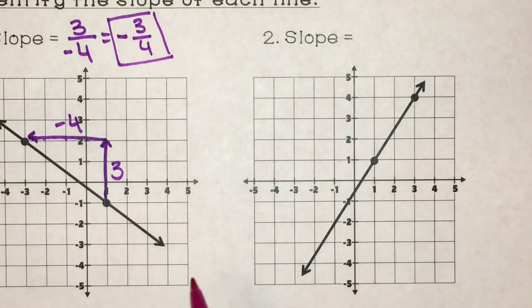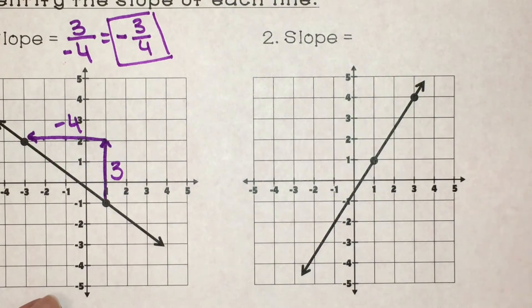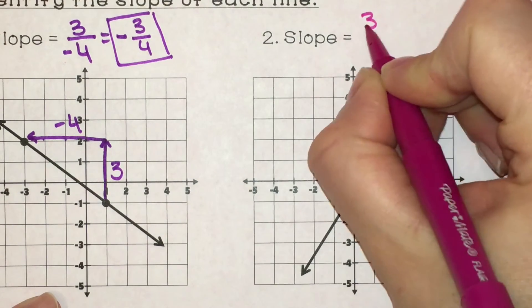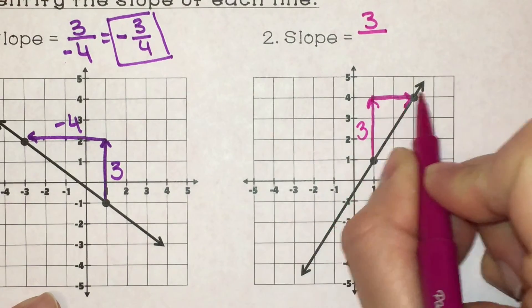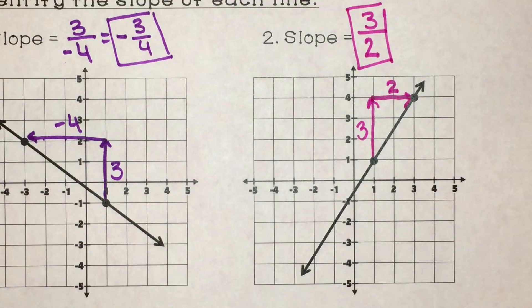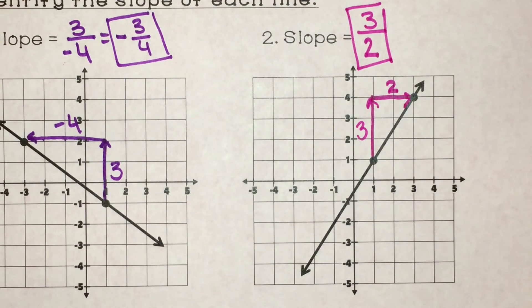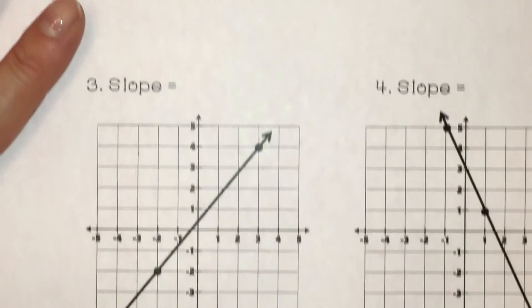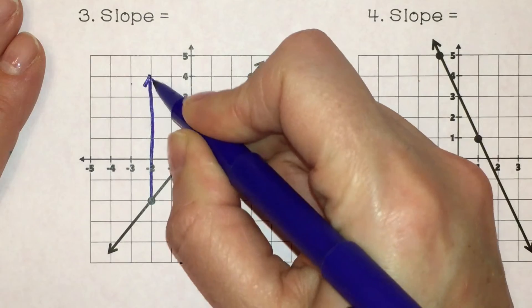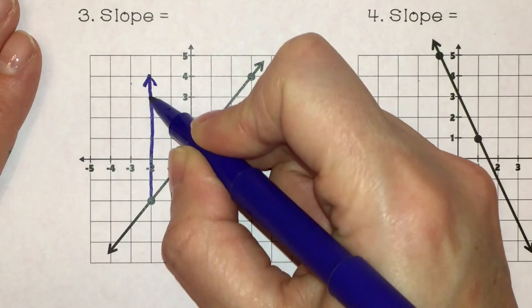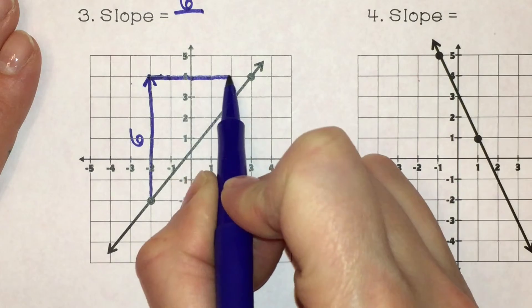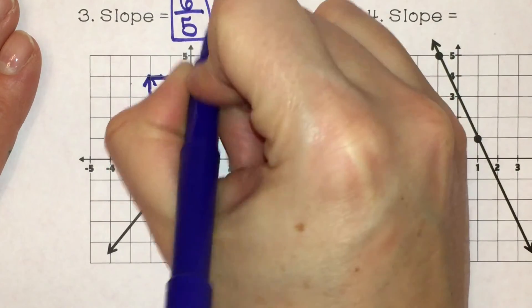This next line is going up, so it has to be positive. Start at my bottom point, rise up until I'm parallel — rise was 1, 2, 3. Then run to the right, which is positive: 1, 2. So three over two. It's an improper fraction, but when you're writing slope you leave it improper — reduce as much as possible, but you leave it improper. For the third one: start at the bottom point, rise going up — positive: 1, 2, 3, 4, 5, 6. Then run to the right, which is positive: 1, 2, 3, 4, 5. So the slope is six over five.